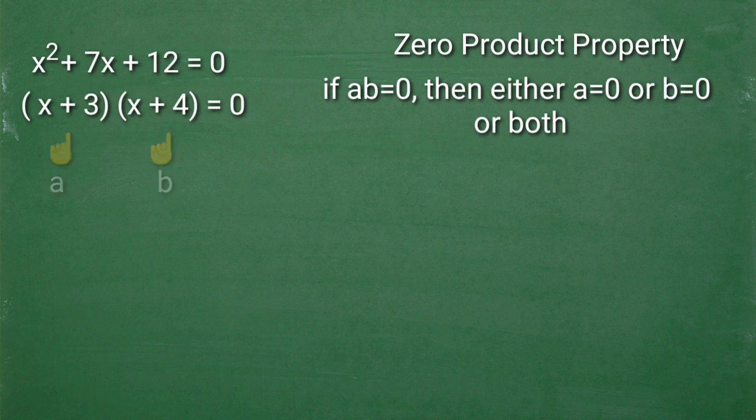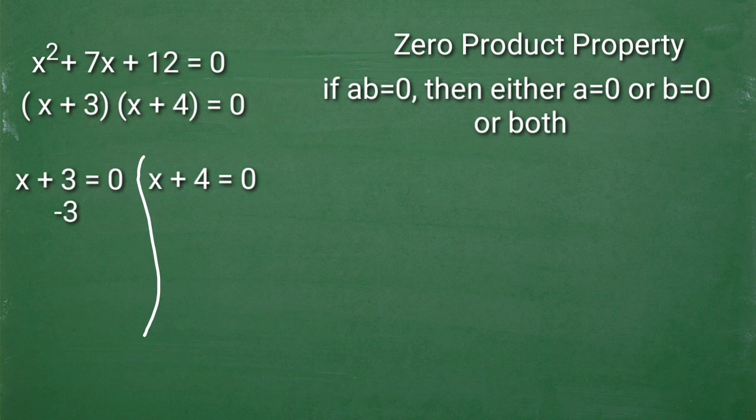The question is, paano magiging zero yung x plus 3? Ano yung magiging value ng x natin? Paano kuhain? At para sa x plus 4, ano yung magiging value ng x para maging zero yung x plus 4 or yung b natin? I-equate lang natin yung 0 yung x plus 3 at x plus 4. So x plus 3 is equal to 0. Subtract both sides by 3. And you will get the value of x equals to negative 3.